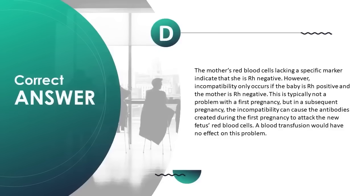Incompatibility only occurs if the baby is Rh-positive and the mother is Rh-negative. This is typically not a problem with a first pregnancy, but in a subsequent pregnancy, antibodies created during the first pregnancy can attack the new fetus's red blood cells. A blood transfusion would have no effect on this problem.